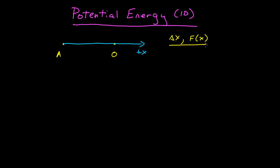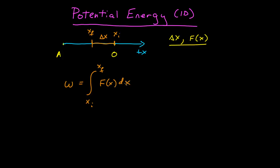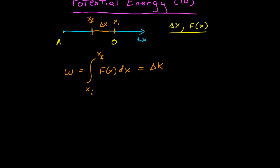If the agent exerts a force on the object and the object moves some distance delta x from some x-initial to some x-final, then work was done on the object. The work done is equal to the one-dimensional integral from x-initial to x-final of f of x dx. Since the object is a particle, the work done is equal to the change in kinetic energy of that particle.